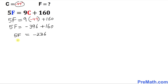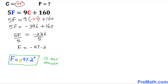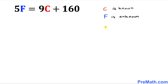So 5F equals negative 236. Dividing both sides by 5, F turns out to be negative 47.2. Thus F equals negative 47.2 degrees is our complete answer. So now I'm sure you are comfortable with this formula — in it, C is the known value and F is unknown.